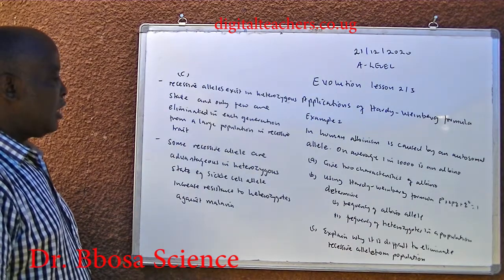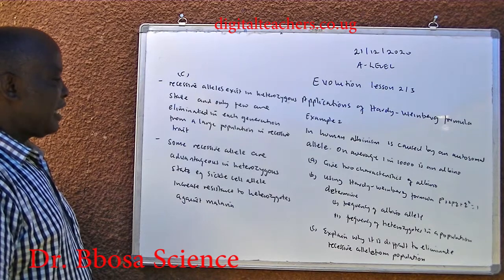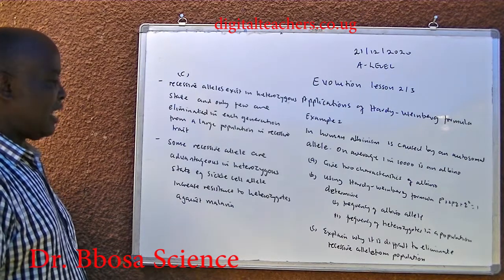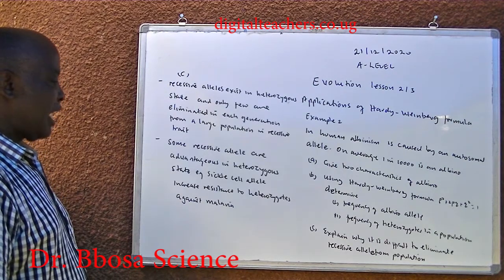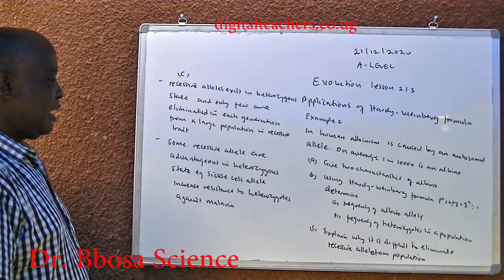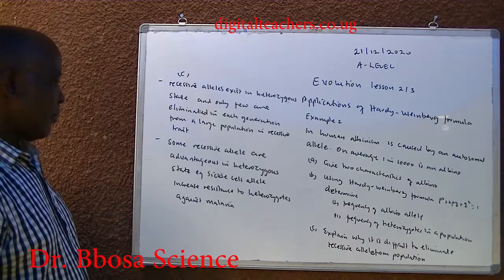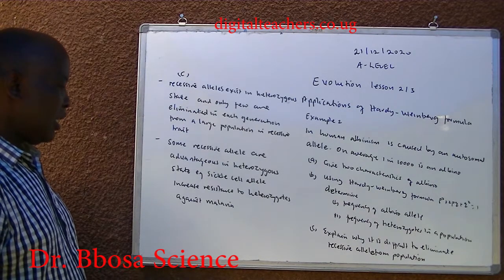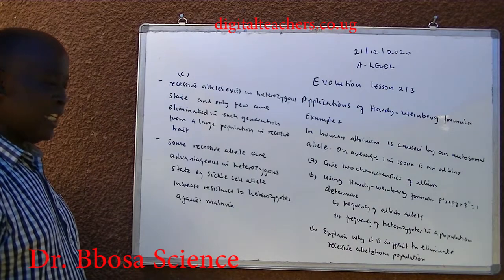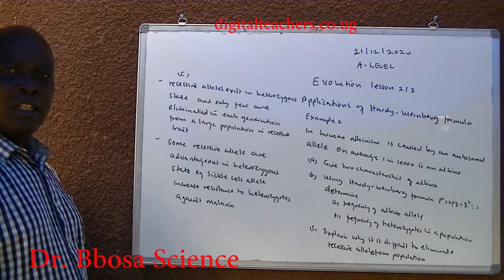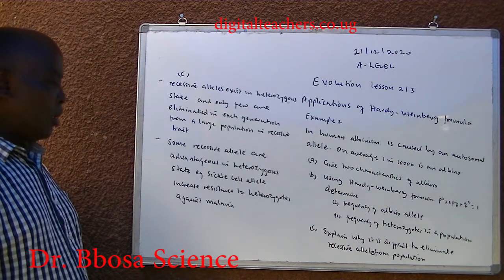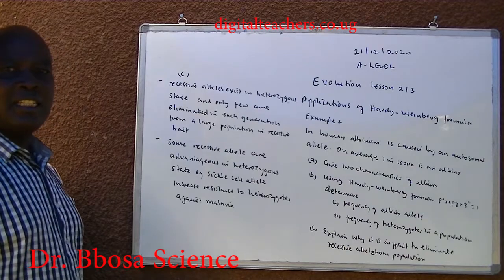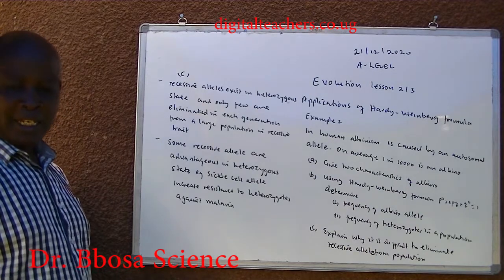Some recessive albino alleles are advantageous in a heterozygous state. For example, heterozygotes increase resistance against malaria.